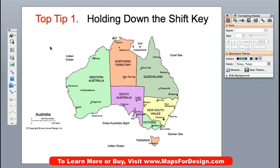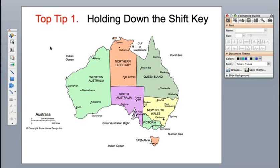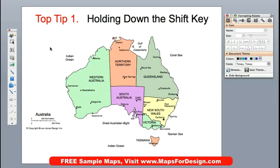When you're customizing maps, one of the most important keys on your keyboard is your shift key. The shift key is right there in the lower left and also on the right-hand side of your keyboard. What the shift key does is it allows you to select a whole group of objects.